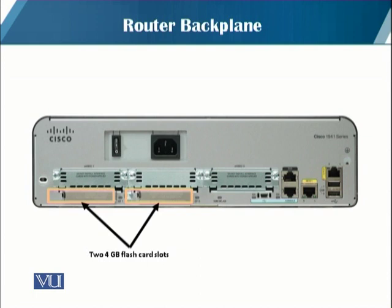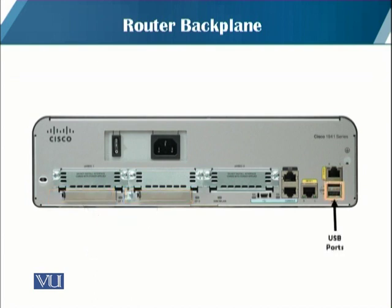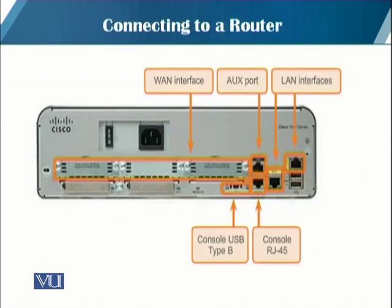The exact configuration depends on the type of router you purchase and varies from router to router, but most routers have these types of ports — the main difference being the number of ports. There are also two USB ports. To connect to a router, there are multiple options: WAN interfaces, auxiliary ports for console-based management access, LAN interfaces for connectivity, and console-based USB access.